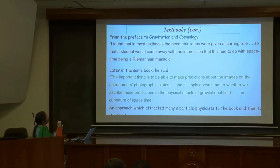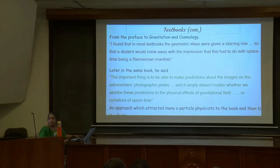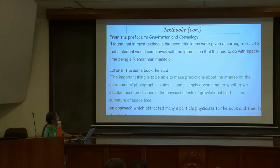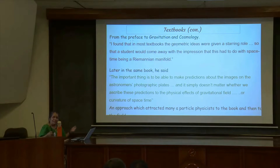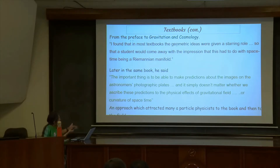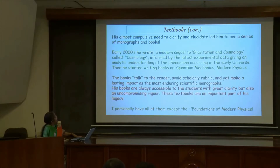From the preface of Gravitation and Cosmology, I'll tell you why particle physicists like this book. He said that in most textbooks the geometric ideas were given a starring role, so that a student would come away with the impression that it had to do with space-time being a Riemannian manifold and had nothing to do with anything physical. That was his objection. He said the important thing is to be able to make predictions about the images on astronomers' photographic plates, and it simply does not matter whether we ascribe these predictions to the physical effects of the gravitational field or to the curvature of space-time. The role of a physicist is to understand what we see in experiments and through that understand the secrets of nature. This approach attracted many particle physicists to the book and to the field.